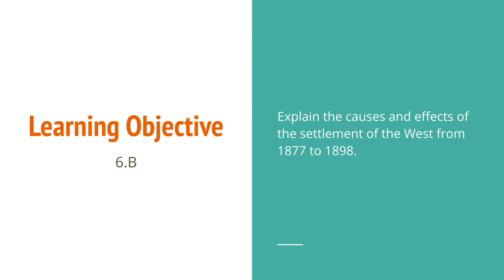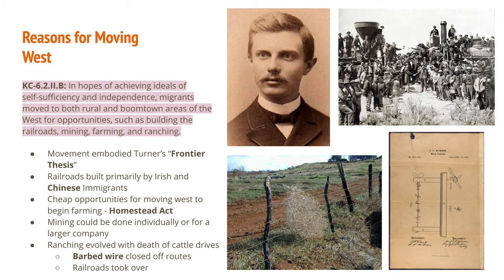The learning objective is to explain the causes and effects of the settlement of the west from 1877 to 1898, and we're going to begin with the reasons for moving out west.